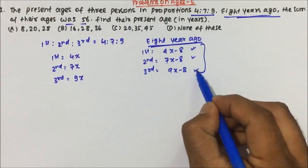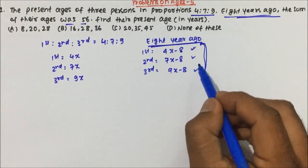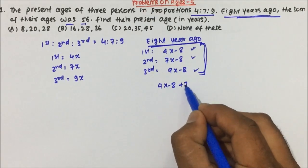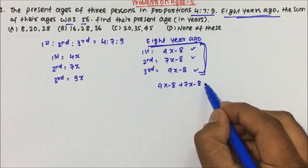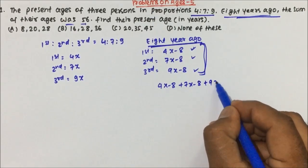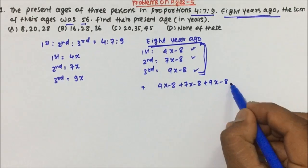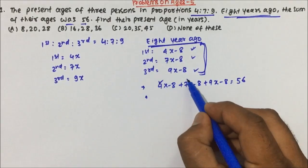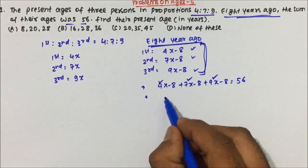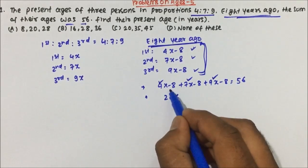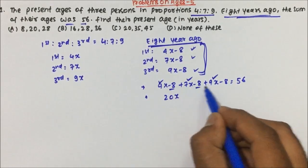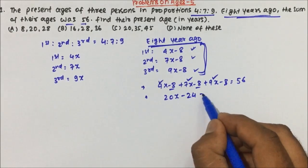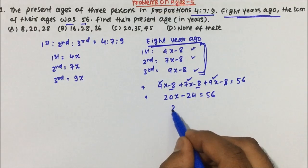Eight years ago, the sum of their ages was 56. So: (4x − 8) + (7x − 8) + (9x − 8) = 56. Now 4x + 7x = 11x, and 11x + 9x = 20x. And −8 − 8 − 8 = −24. So 20x − 24 = 56.